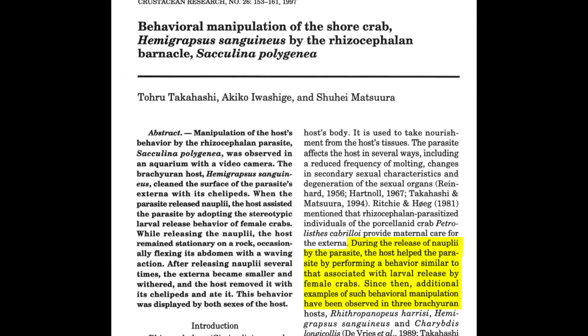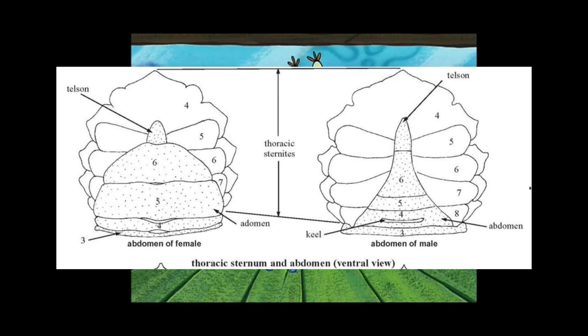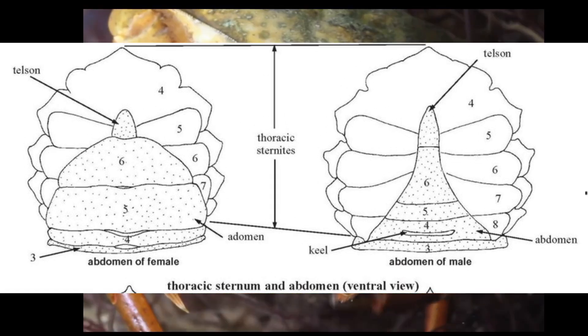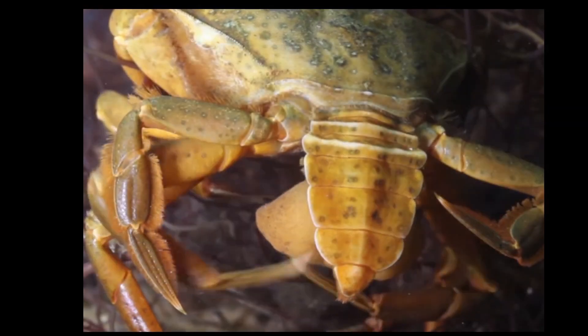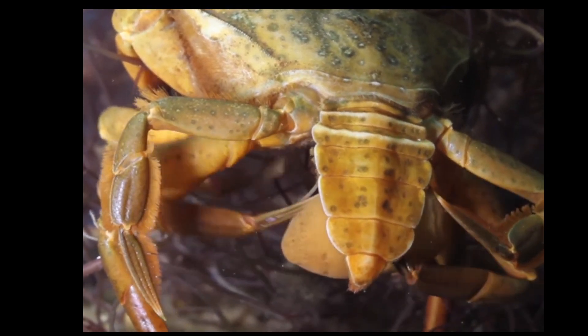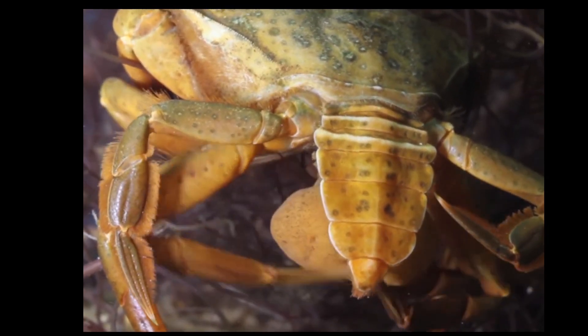The parasite doesn't only infect female crabs, so what happens when a male crab gets infected by the barnacle? Simply put, it feminizes the male crabs by broadening the abdomen of the crab and reducing the size of their claws. These male crabs will then go on to act like female crabs and will start to nurture their new parasitic brood sac in the same way a female crab would tend to her eggs.